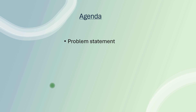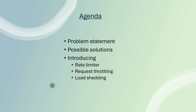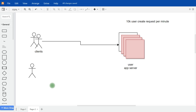We are going to define the problem statement — how overloading and abuse cases can happen, what the possible solutions are, and we will introduce rate limiting, request throttling, and load shedding. We'll go step by step: problem statement, possible solutions, then specific topics, and finally real-life industry examples of where these three techniques are used to prevent overload and abuse.